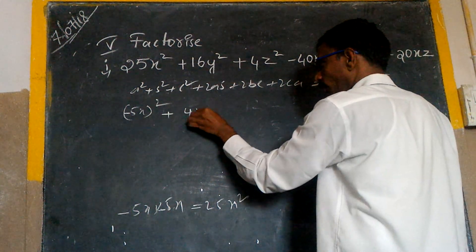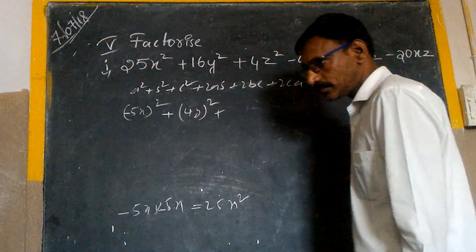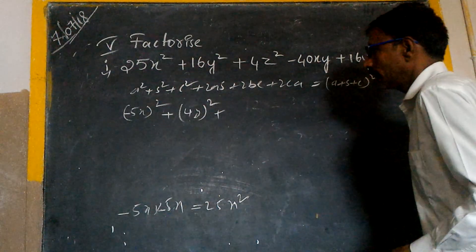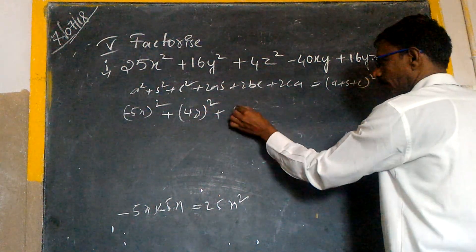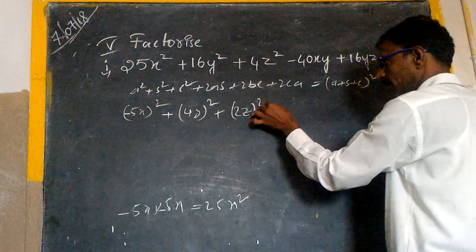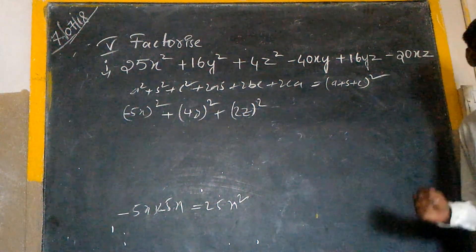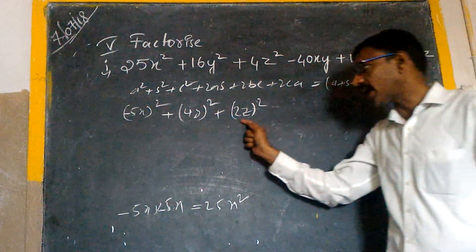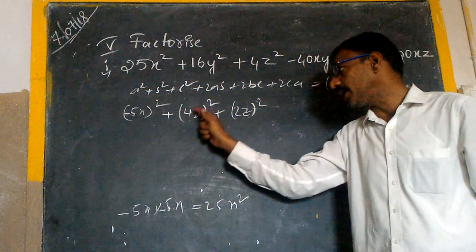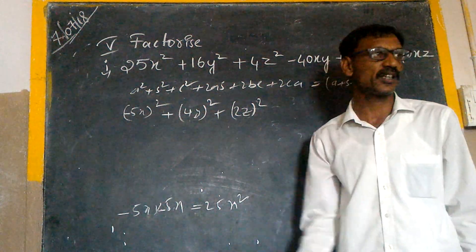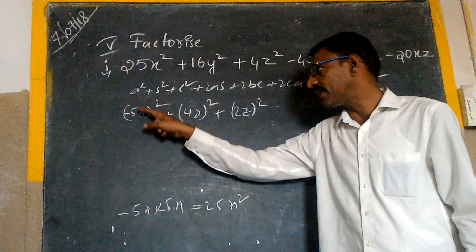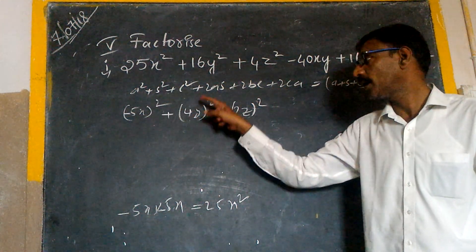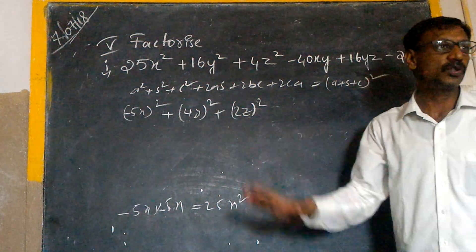25x square. So very next one, this is we can write 4y whole square. The next one is 2z whole square. 2z whole square means 2z into 2z, which is 4z square. So now I can recognize minus, a, b, and c from this square. My a value is minus 5x, and my b value is 4y, and my c value is 2z.